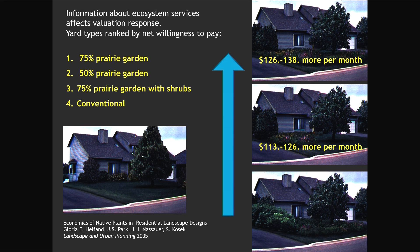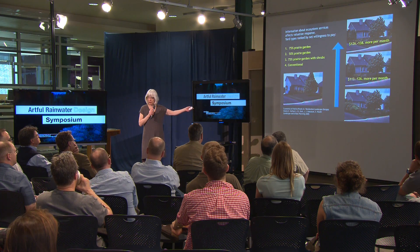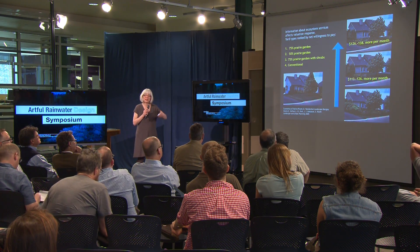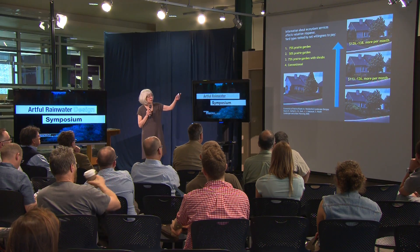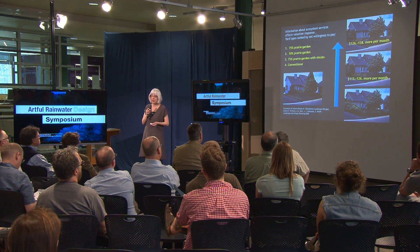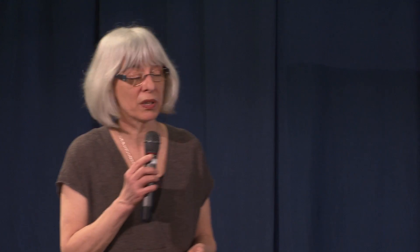Subsequently, we did a contingent valuation study with economist Gloria Helfand, about 10 years later with a larger exurban homeowner population. People were willing to pay about $125 more per month for either of the alternatives shown at the top, but not for the alternative at the bottom with woody shrubby cover. Both top alternatives were valued more than a conventional front yard — partly because the contingent valuation technique provided information that these alternatives included biodiversity and stormwater management services.